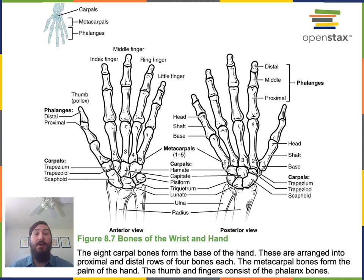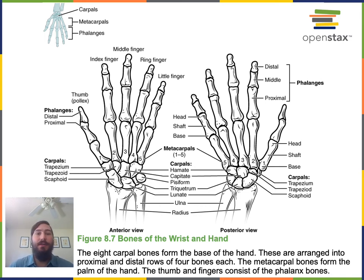The metacarpals are five long bones found in the manual region, in the palmar region of the hand. The distal end of each metacarpal contacts a phalange. The phalanges are the small long bones in the digital regions. The pollux contains just two phalanges — a proximal phalange and a distal phalange — whereas the other digits each have three phalanges: a proximal, middle, and distal.